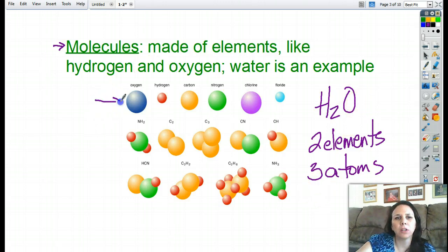So here's a little color-coded diagram for you. Oxygen, hydrogen, carbon, nitrogen, chlorine, fluoride. These are all things that can be found in the human body. And then these are just different compounds. NH2, C2, C3, CN, CH. This stuff right here, that's ammonia. That's something that is highly toxic to humans, and our kidneys are constantly trying to get out of our body, so that way it doesn't kill us.